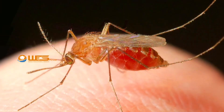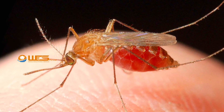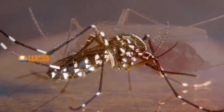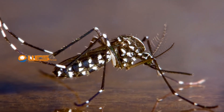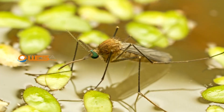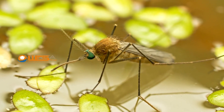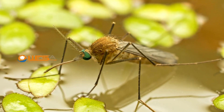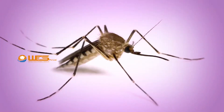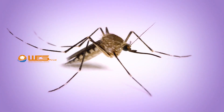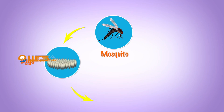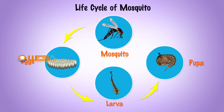Most female mosquitoes have to feed on an animal and get sufficient blood meal before being able to develop eggs. Mosquitoes must have water in which to complete stages of their life cycle. We will now look at the four distinct stages of development in the life cycle of a mosquito.